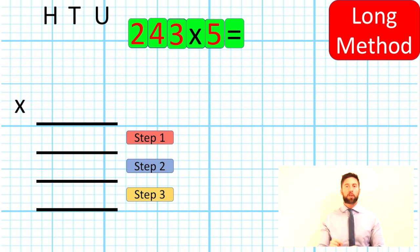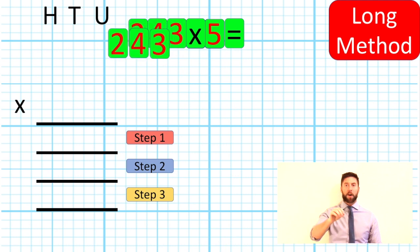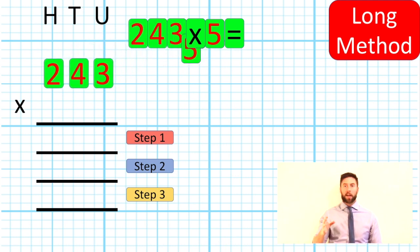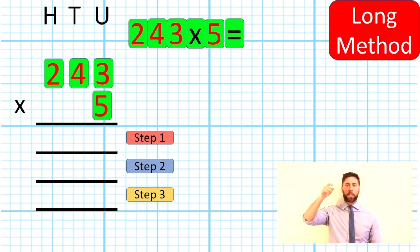Okay guys, we're going to have a little look at long method first. I strongly recommend doing this. It's a bit of a bridge between our previous method, our grid method, and our short method. It sort of crosses that bridge. So we're going to drag our numbers down. I'm going to put my 2, my 4 and my 3, and I'm going to put my 5 underneath my 3.